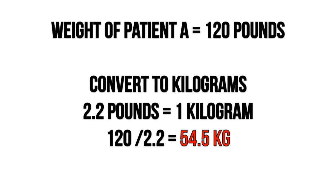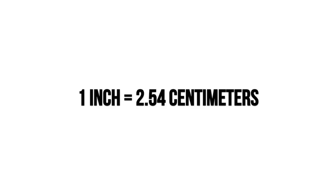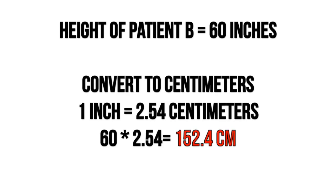So a patient that weighs 120 pounds is equivalent to 54.5 kilograms. The next conversion is inches to centimeters. One inch equals 2.54 centimeters. Let's say you have a patient that is 60 inches tall and you need to convert that into centimeters. All you do is multiply 60 inches by 2.54 and you get 152.4 centimeters.